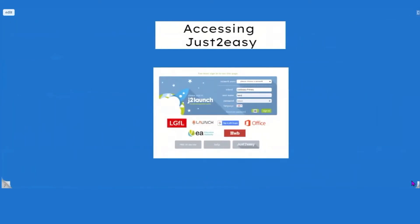You can access Just2Easy through j2e.com. This is the login page and it really depends on how your account is set up. Some of you may have a manual account, in which case you'll be given a school name, a username and a password to input. Some of you will be accessing through a third-party provider with a universal sign-on (USO). Options include LGFL, BGFL, Google Classroom, Office 365, C2K for Northern Ireland, and Hub for Wales. You can click any of these buttons, use your USO to log in, and it will log you straight in.